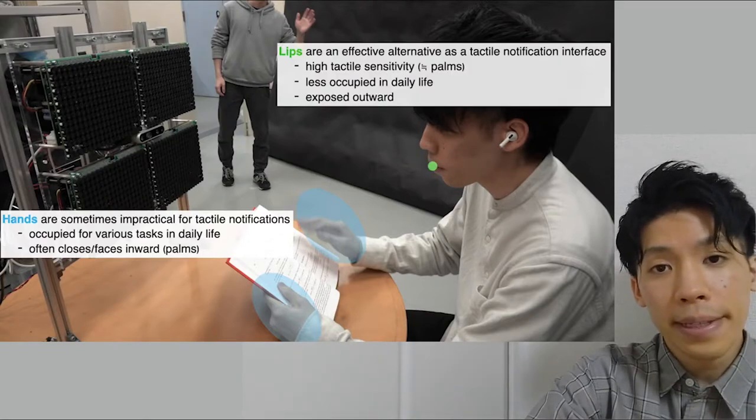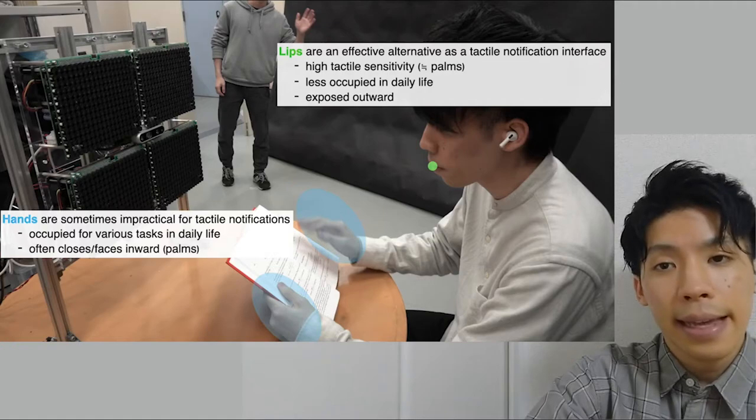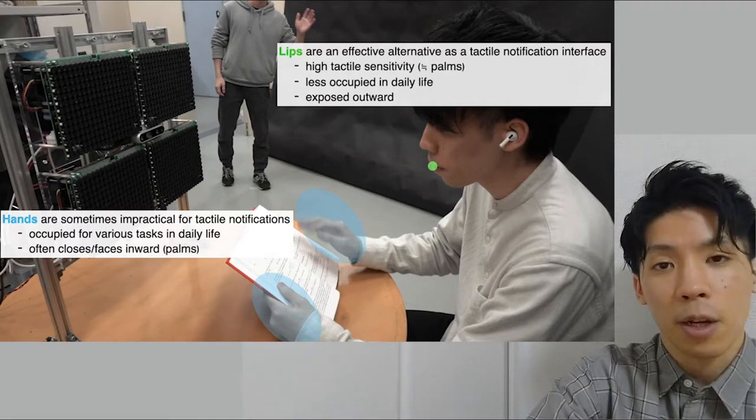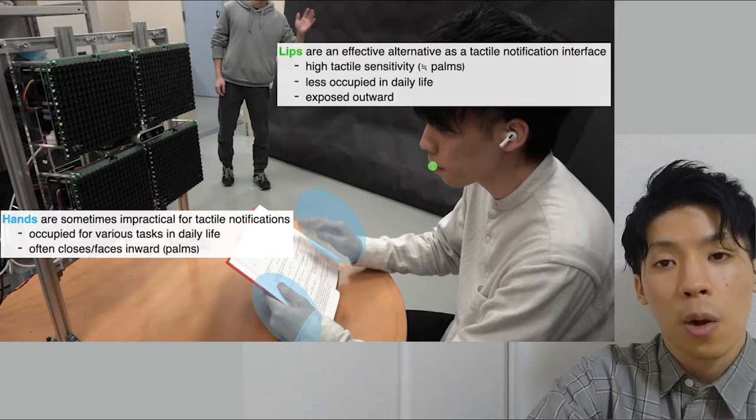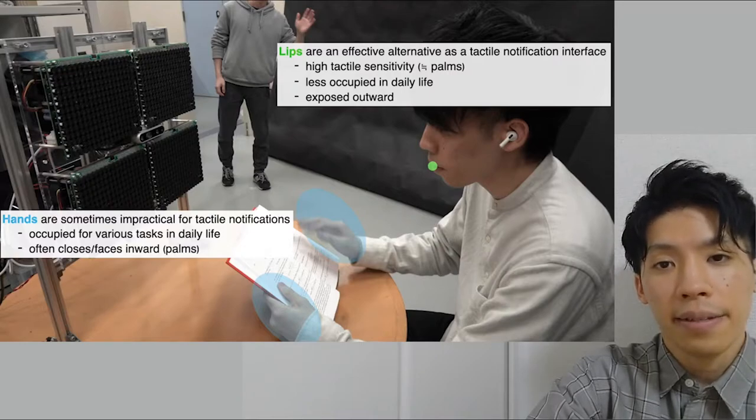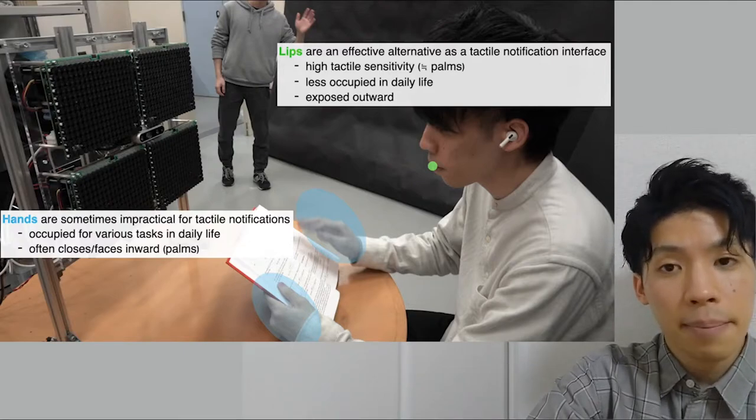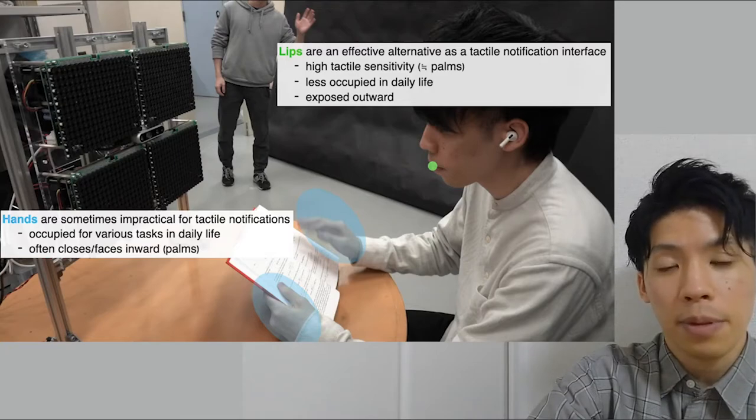We focused on non-contact tactile notification to lips. They have high tactile sensitivity comparable to the palms. In addition, compared to the palms or fingertips, the lips are constantly exposed outward unless occupied in daily life. In terms of the balance between tactile sensitivity and occupancy, lips can be another effective place to receive non-contact tactile notification from the outside.